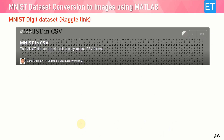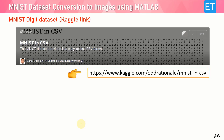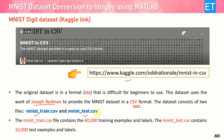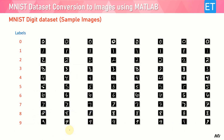This is the Kaggle link of the same digit database. When you click this link — also given in the description — you can jump to this page. It has the same database but in CSV format. This dataset uses the work of Joseph Redmon to provide the MNIST dataset in CSV. On this page you can find two files: train.csv and test.csv. CSV is simpler than the IDX format. In train.csv you will find 60,000 training examples, and in test.csv you will get the 10,000 test examples.